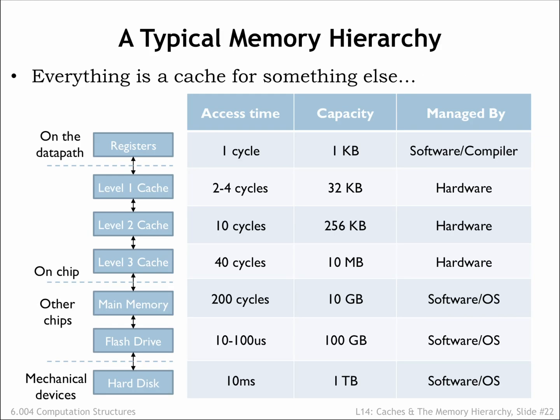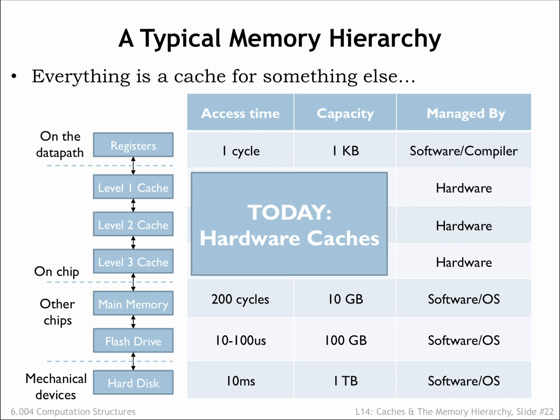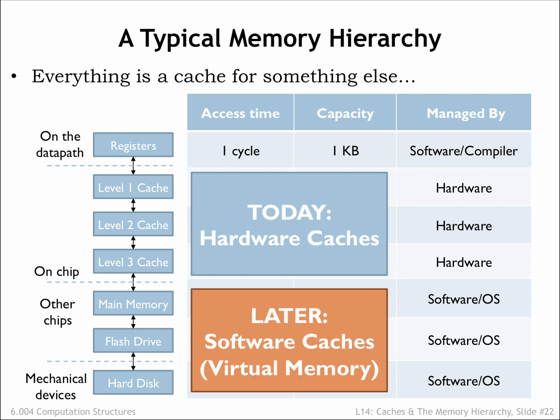Here's an example memory hierarchy that might be found on a modern computer. There are three levels of on-chip SRAM caches followed by a DRAM main memory and a flash memory cache for the hard disk drive. The compiler is responsible for deciding which data values are kept in the CPU registers and which values require the use of loads and stores. The three-level cache and access to DRAM are managed by circuitry in the memory system. After that, the access times are long enough that the job of managing the movement of data between the lower levels of the hierarchy is turned over to software. Today we're discussing how the on-chip caches work. In part 3 of the course, we'll discuss how the software manages main memory and non-volatile storage devices.